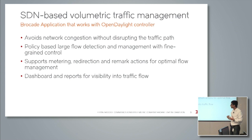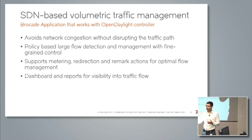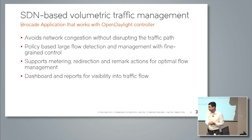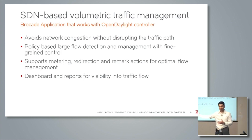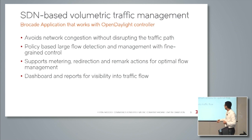This application provides policy-based large flow detection. For example, I could look into layer 2, layer 3, or layer 4 attributes of these large flows and define certain policies. For instance, I want to focus on VLAN 10, and if traffic exceeds more than 500 Mbps or 1 Gbps, I want to meter the traffic going to one of my end customers. Or I want to look at a specific flow going from a particular source IP to a particular destination IP and replicate that flow for further troubleshooting onto a different port. Those are the kinds of policies you can define in the application.